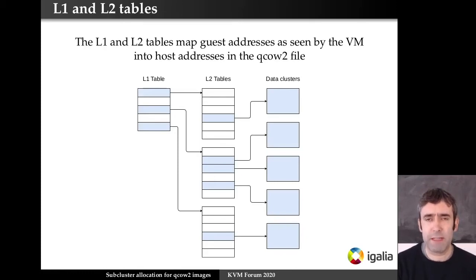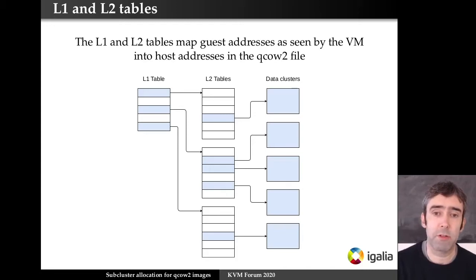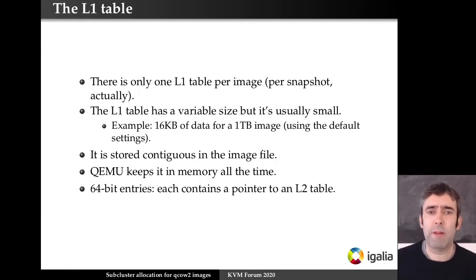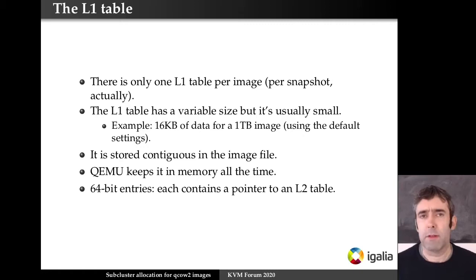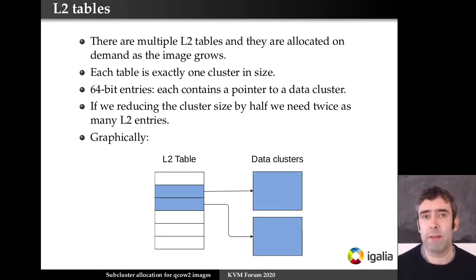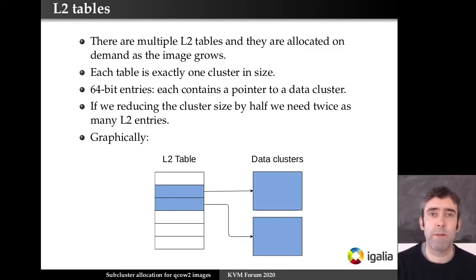The mapping from guest offsets to host offsets is done using a structure called L1 and L2 tables. The L1 table is just one per image per snapshot. For a one terabyte image it's just 16k, so it's very small and QEMU always keeps it in memory — it basically contains pointers to the L2 tables. L2 tables can be many and are allocated on demand as the image grows. They are always one cluster in size and contain pointers to data clusters plus additional information.